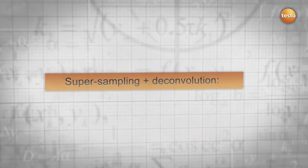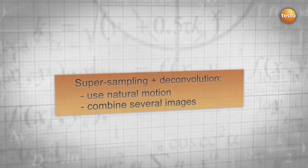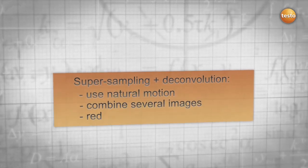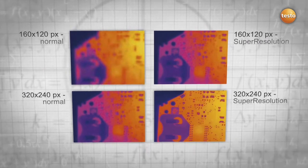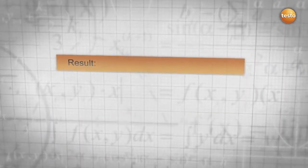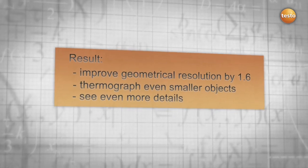The conclusion: with the aid of the natural movement of the hand, Super Resolution combines all advantages of super sampling and deconvolution into a new and revolutionary technology. As a result, Super Resolution improves your resolution and allows you to thermograph even smaller objects and see more details.